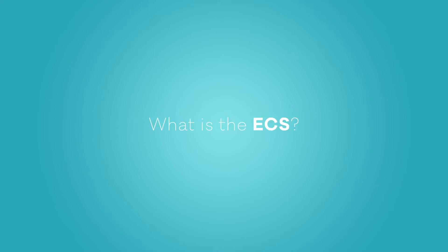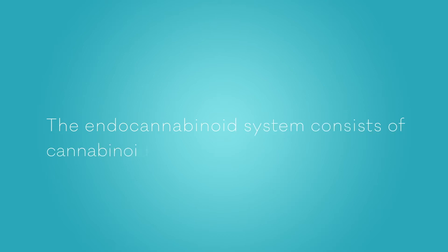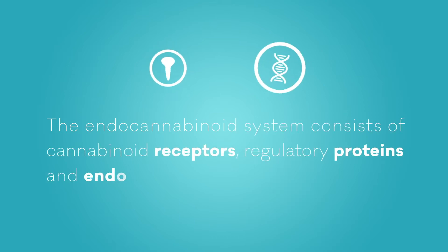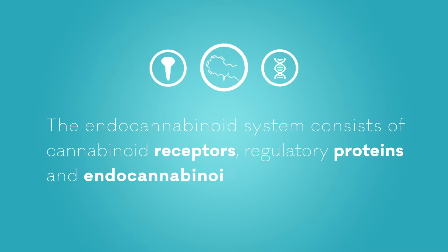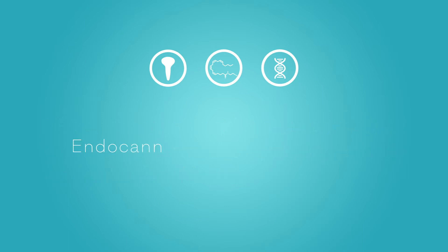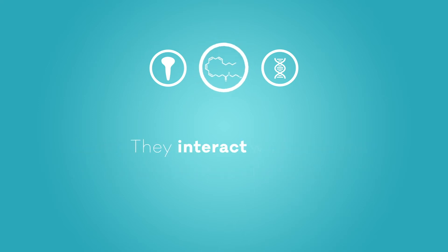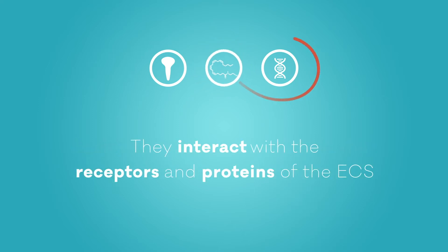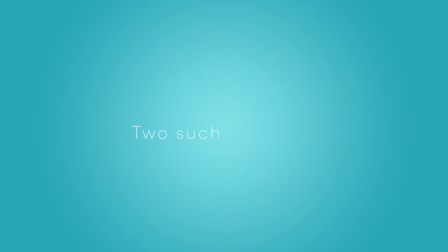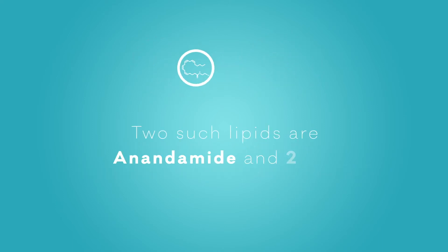What is the ECS? The ECS consists of cannabinoid receptors, regulatory proteins, and endocannabinoids. Endocannabinoids are lipids that are produced naturally in the body. They interact with the cannabinoid receptors and regulatory proteins of the ECS. Two such lipids are anandamide and 2-AG.